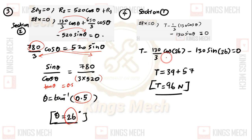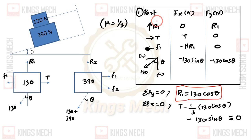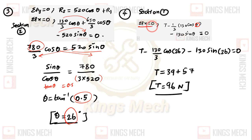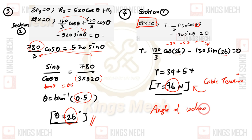In the first equation, substituting theta = 26 degrees, we will get the value of tension T = 96N. So we get the angle of inclination.